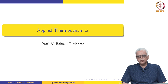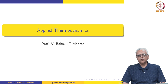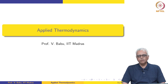In the first-level course, we discussed primarily the concepts relating to thermodynamics: concepts like system, control volume, state of a system, properties, pure substances, how to evaluate changes in properties of pure substances, and then the first law of thermodynamics for a system and for a control volume. We also developed concepts relating to the second law of thermodynamics, namely the Clausius inequality, the Kelvin-Planck statement, and the Clausius statement of the second law.